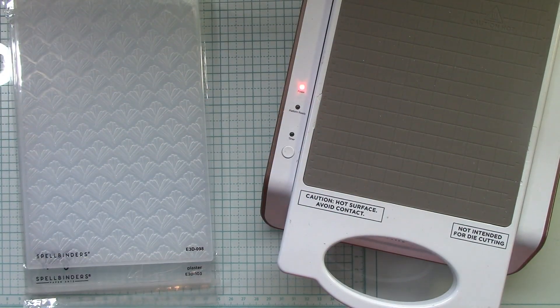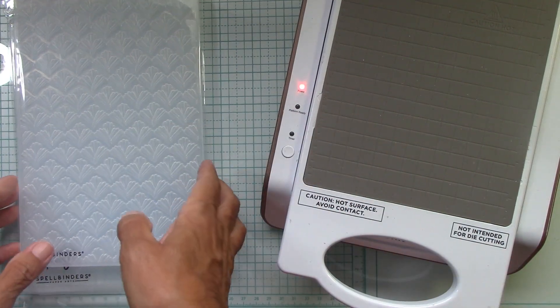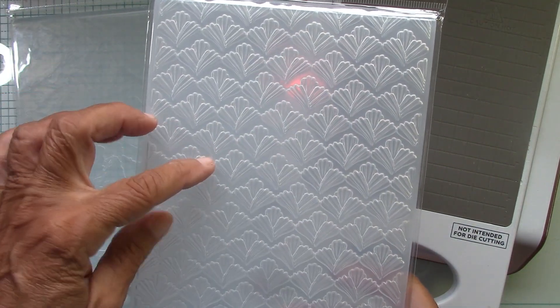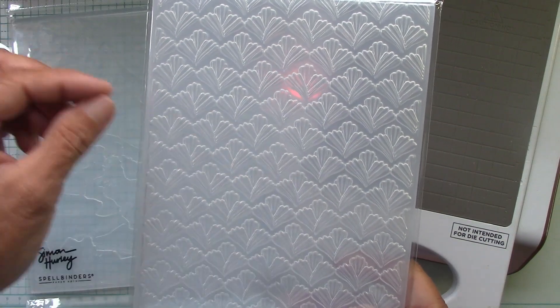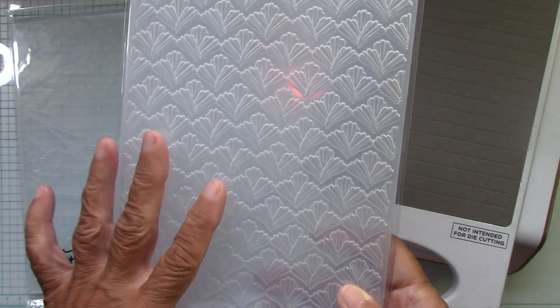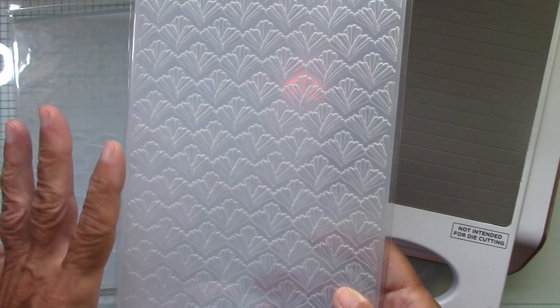Then we have this beautiful flourish embossing folder. It almost looks like it's icing, like paint, with icing kind of thing. A wonderful background embossing folder for many cards.